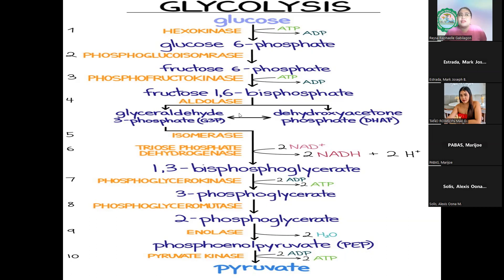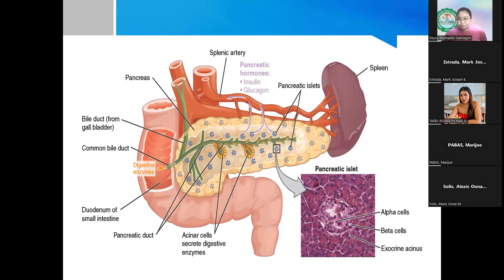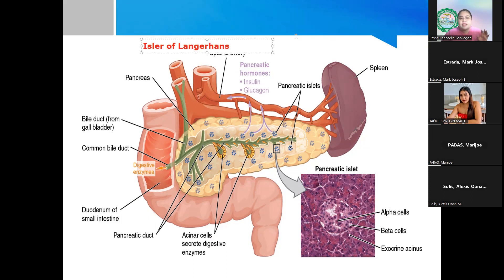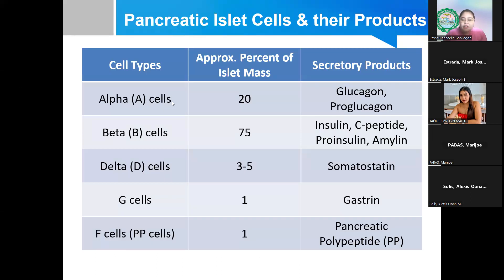Glucose cannot enter the cell without insulin. Therefore, if a person has a problem with insulin production, that leads into diabetes. Insulin is produced in the pancreas — specifically from the beta cells of the islets of Langerhans of the pancreas.